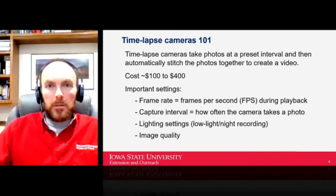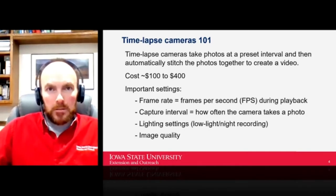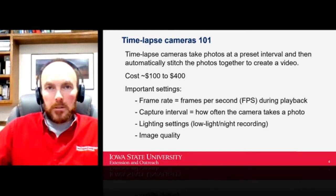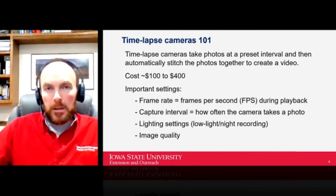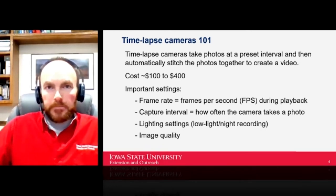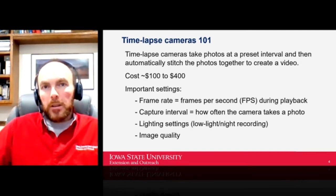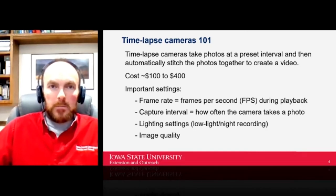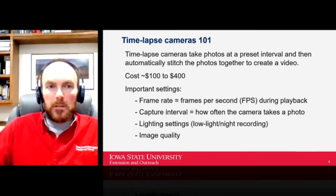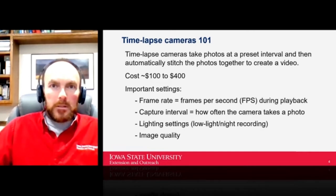What is a time-lapse camera and how does it work? Basically it's a camera that takes a photo at a preset interval, and newer-style cameras will automatically stitch all those photos together into a video. When these originally started being used, you needed separate software to stitch the photos together, but newer cameras do all of that for you and they're very inexpensive — anywhere from $100 to $400 depending on the brand and accessories.